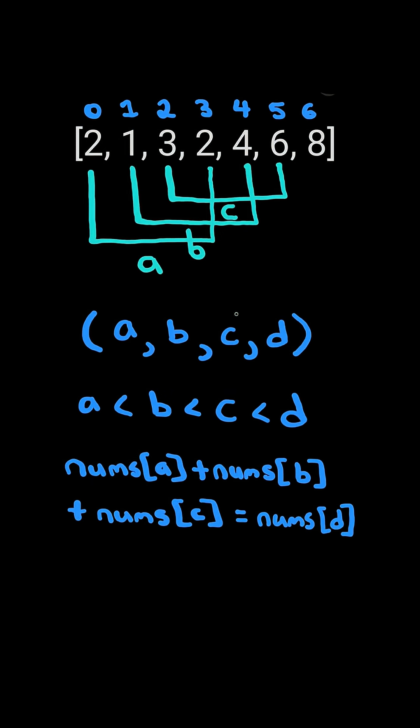The third loop, c, will iterate after b up to n minus 1. And lastly, loop d will iterate after c up to n.